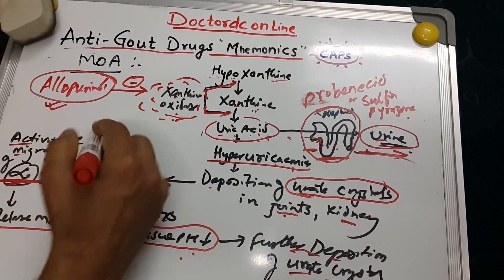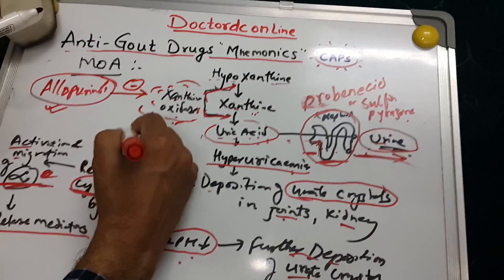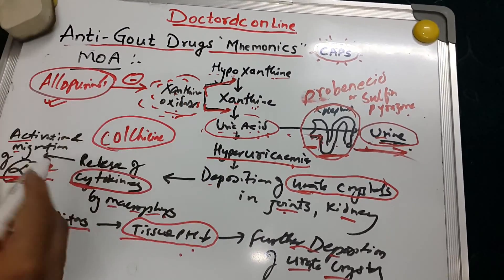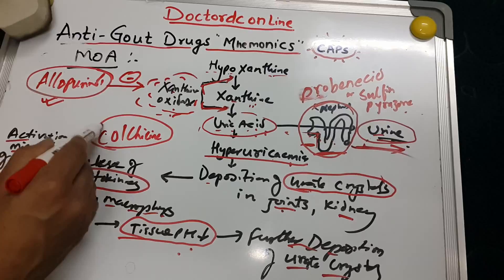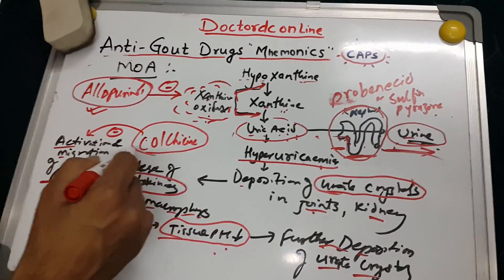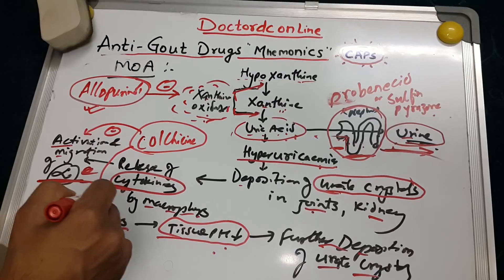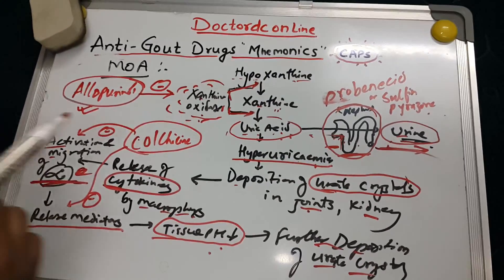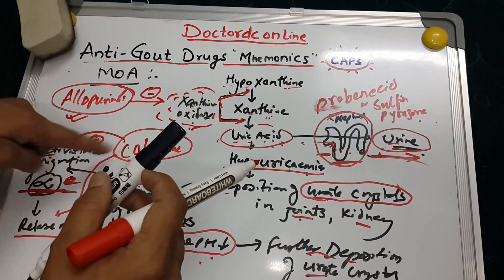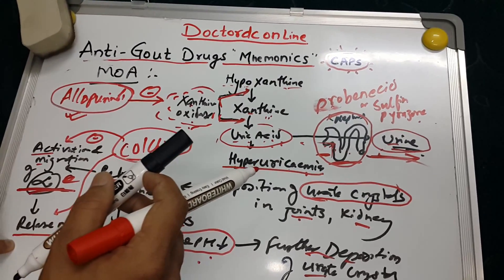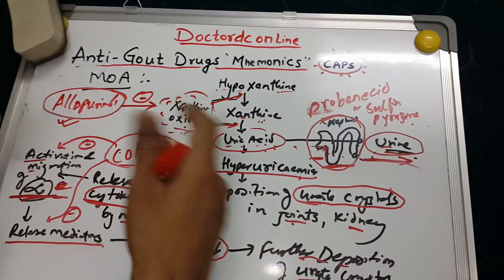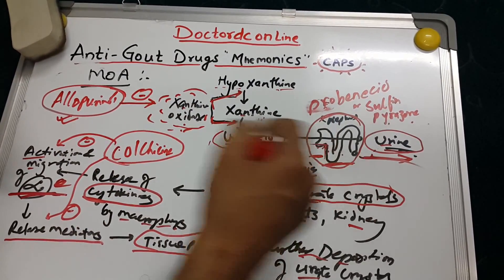The third important drug is colchicine. Colchicine's mechanism of action is to inhibit the activation and migration of neutrophils, and also inhibit the release of inflammatory mediators. In this way, colchicine controls the acute inflammatory response in gout.